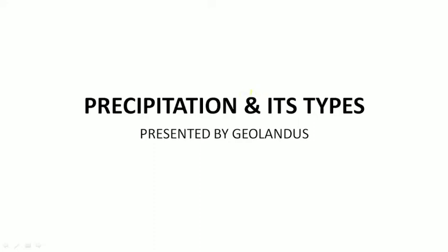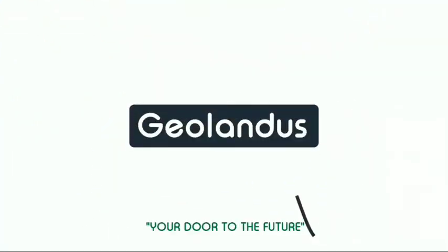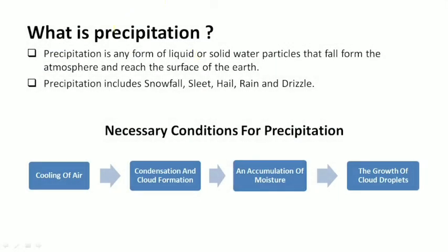Hello everyone, today I'm going to discuss what is precipitation and what are its types. So let's get started. Precipitation is any form of liquid or solid water particles that fall from the atmosphere and reach the surface of the earth. Precipitation in liquid form may be rainfall, or solid may be snowfall. It may be in the form of snowfall, sleet, hail, rain, and drizzle.